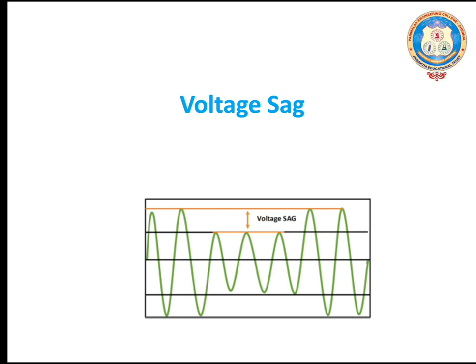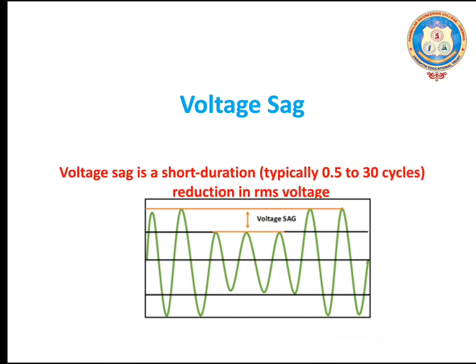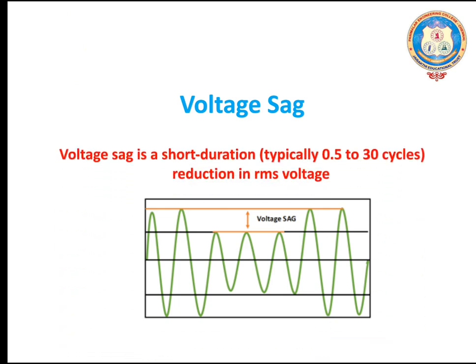What is Voltage Sag? Voltage Sag is a short duration variation in which there is a reduction in RMS voltage, which occurs typically by 0.5 to 30 cycles.